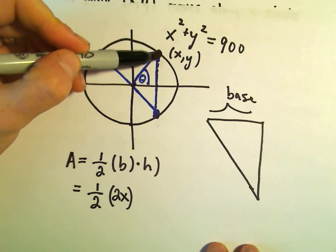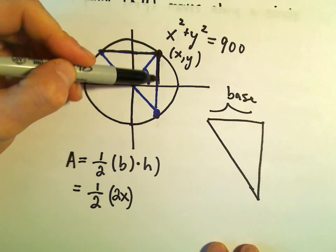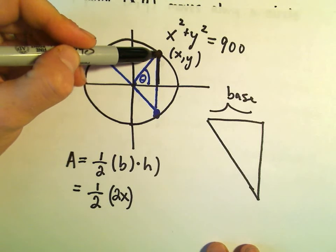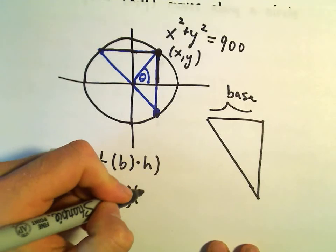Likewise, to get the height, well, if we're sitting here at some point (x, y), that means the height is going to be whatever the value of the y coordinate is. But, again, the height of the entire triangle would be twice that.